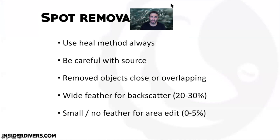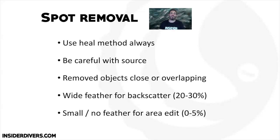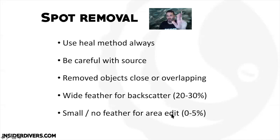For spot removal: use the Heal method, be careful with your source, and check that all source starting points are correct. Be careful when removed objects are close to or overlapping each other — that requires quite a bit of fine tuning. For backscatter use 20 to 30 percent feather; for an area edit use zero to five percent feather.